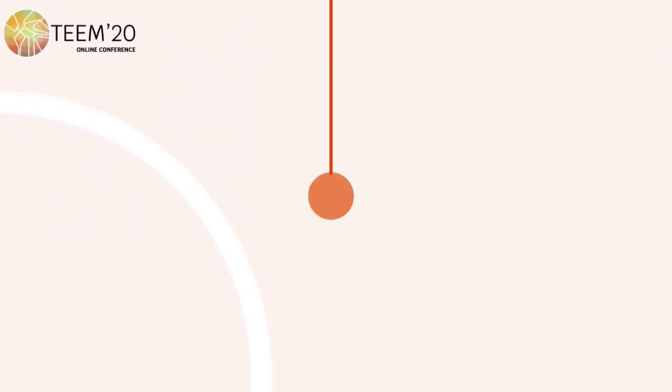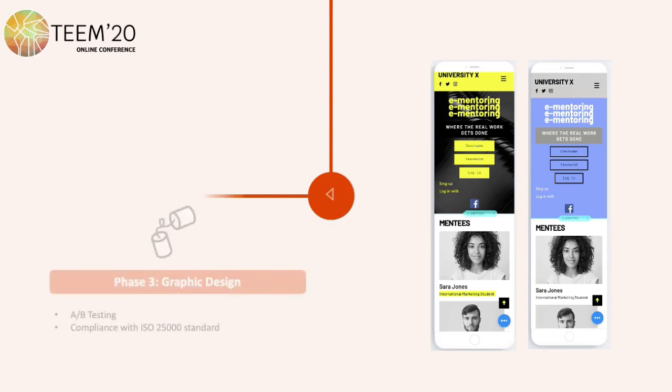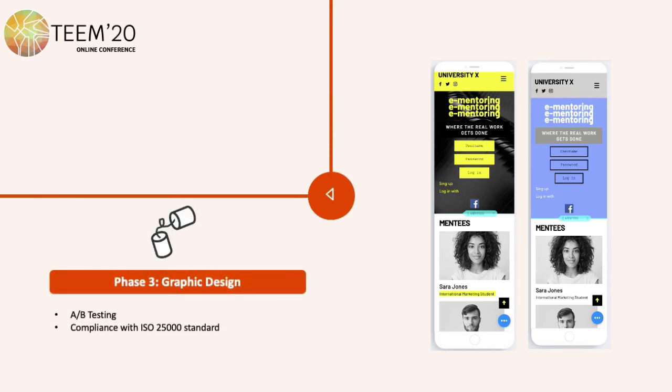Phase 3: graphic design. At this stage, the wireframes and the mockups are handed over to the graphic designer, who is responsible for the creation of each individual design asset. The following actions were taken: A-B testing, a usability tool that allows us to make evaluations with real visitors of our app, to objectively measure the best design among several alternatives.